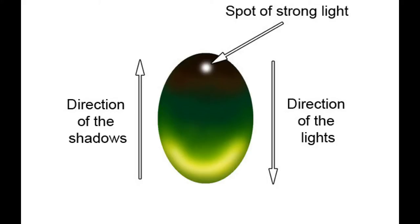In case of painting a gemstone we have to focus on three main elements. First, the spot of the strong light or the source of the incoming light at all. Second, the direction of the light which is directed from top to bottom. Third, the direction of shadow which is directed inverse to the light, so from bottom to top.